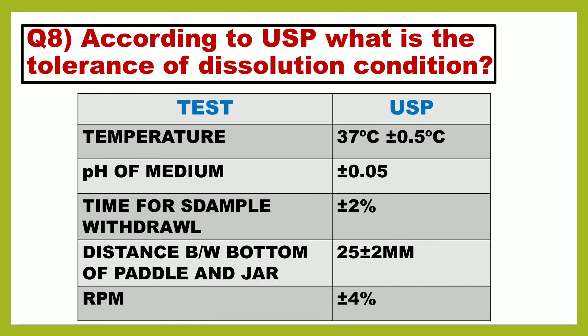Next question is: according to USP, what is the tolerance of dissolution conditions? Temperature: 37°C ± 0.5°C. pH of the medium: ± 0.05. Time for sample withdrawal: ± 2%. Distance between bottom of paddle and jar: 25 ± 2 mm. And RPM: ± 4%.